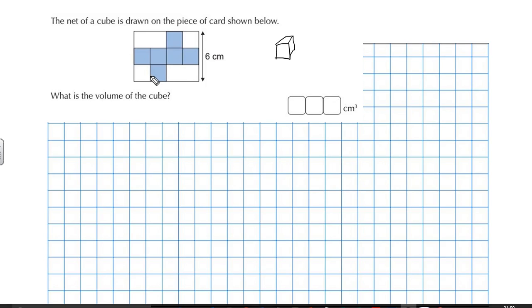So what do we know? We know that this all together is six centimeters. We also, we've been told that it's a cube. That means that each of these is a square. So this is the same length as this, is the same as this, the same as this, the same as this. Do you see where I'm going?